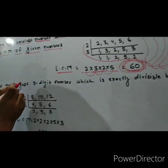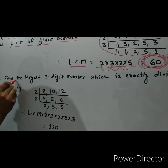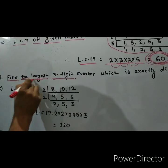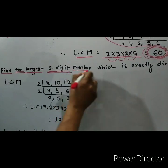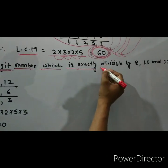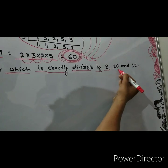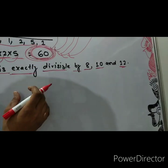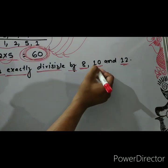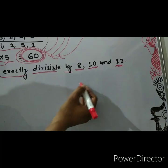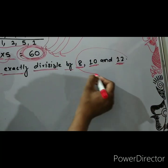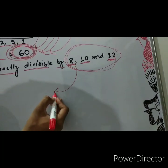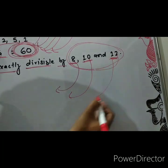Look at another question student. Find the largest 3-digit number which is exactly divisible by 8, 10 and 12. Again student, when we find the LCM of these numbers 8, 10, and 12, we will get a number that is exactly divisible by 8, 10, and 12.